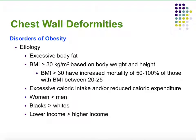The next topic is disorders related to chest wall deformities — specifically obesity. The etiology is obesity, meaning excessive body fat. Those with a BMI of 30 kg/m² have an increased mortality of 50 to 100% compared to those with a BMI of 20 to 25. BMI is based on body weight and height and is an easy way to assess whether someone may have increased risk of certain illnesses and diseases.